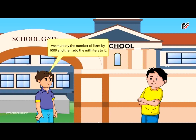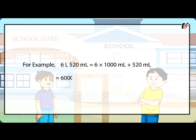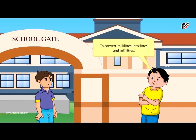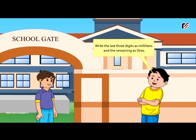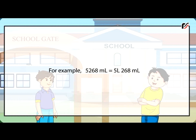To convert litres and millilitres into millilitres, we multiply the number of litres by 1000 and then add the millilitres to it. For example, 6 litres 520 millilitres is equal to 6000 mL + 520 mL = 6520 millilitres. To convert millilitres into litres and millilitres, write the last three digits as millilitres and the remaining as litres. For example, 5268 mL is equal to 5 litres 268 millilitres.